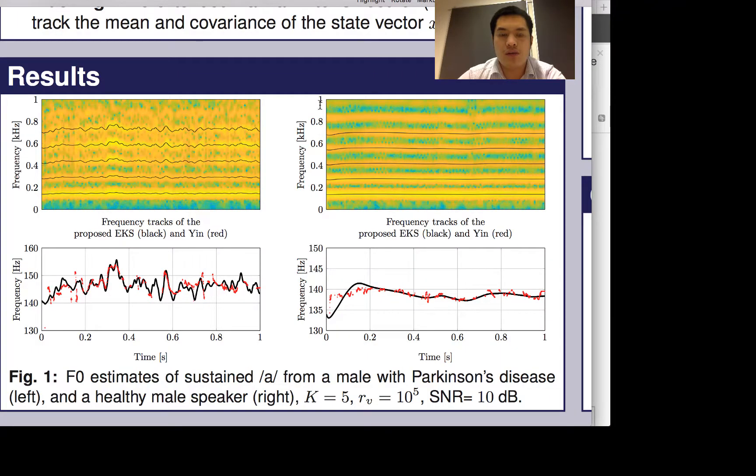Besides, I would also like to show you some results for Parkinson's disease. The figure on the left-hand side is from a male speaker with Parkinson's disease, and on the right-hand side is from a healthy male speaker. Again, the proposed extended Kalman smoother tracks the pitch very well for both cases.